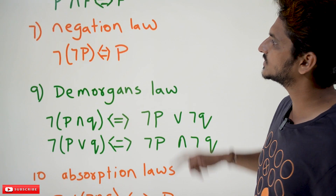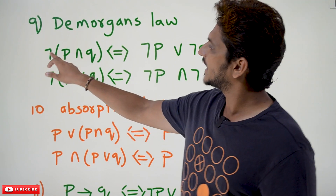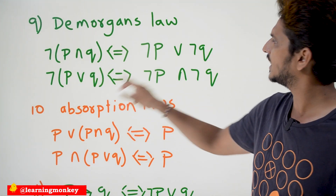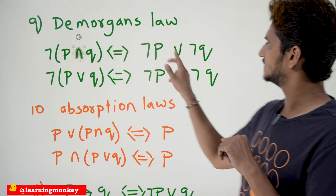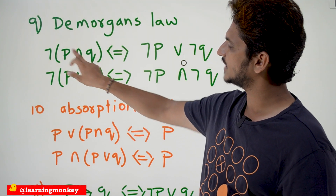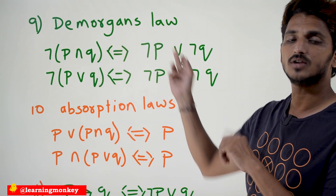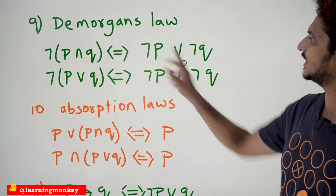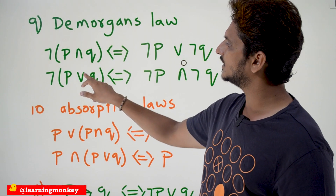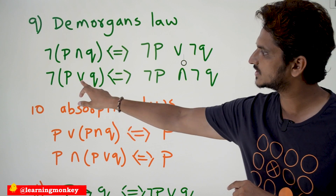The next one is the negation law: negation of negation P is equal to P. Next is De Morgan's law — this is also very important. Negation of (P disjunction Q) can be written as negation P conjunction negation Q — disjunction is converted to conjunction when negation goes inside. Negation of (P conjunction Q) can be written as negation P disjunction negation Q — conjunction is converted to disjunction, and negation is applied to all values.